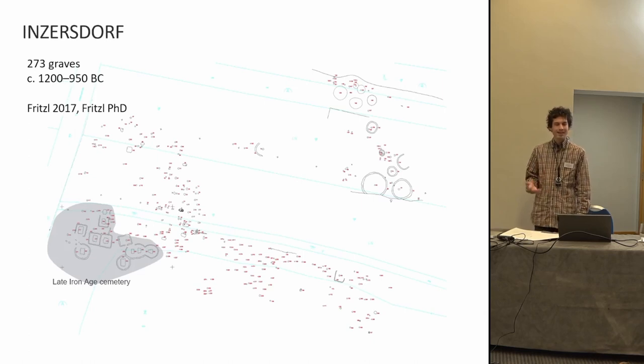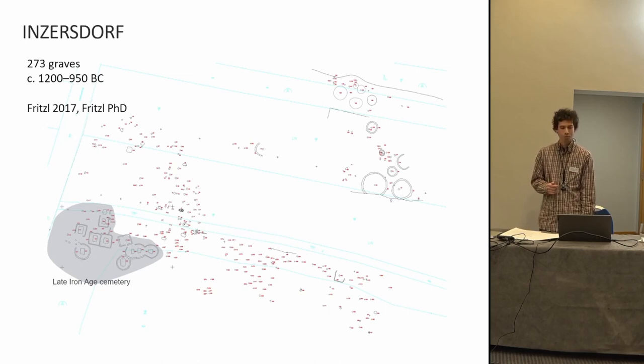Our first test case study was Inzersdorf. The cemetery includes a total of 273 graves, scattered cremation and urn burials, deposited from around 1200 to 950 BC. In addition to simple round grave pits, the cemetery includes body-shaped graves lined with stones and graves with a rectangular floor plan. Squares and circular shallow ditches have been reported as grave enclosures.